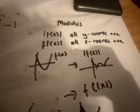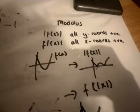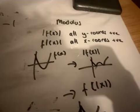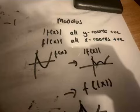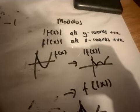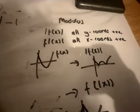Now, for the first one, where the modulus is on the whole function, all the y-coordinates become positive. In the case where it's just touching the x, all the x-coordinates become positive. What does this actually mean in terms of drawing a graph? Let's have a quick look here.